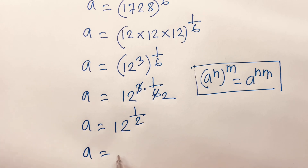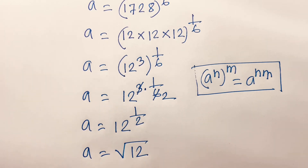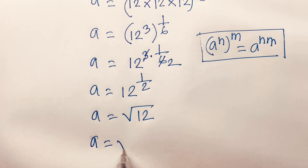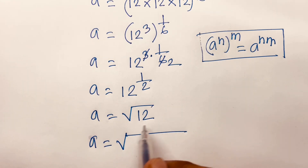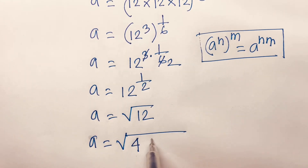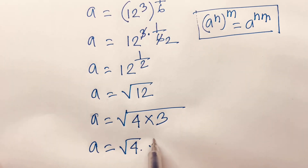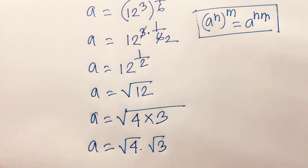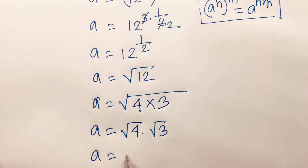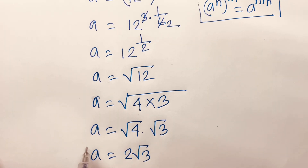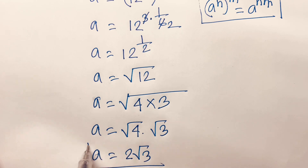Therefore a is equal to the square root of 12, which is the square root of 4 times 3. This gives us the square root of 4 times the square root of 3, so a is equal to 2 square root 3. This is our final answer.